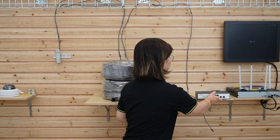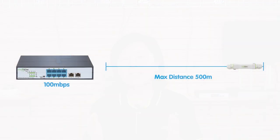There are three different ways we can use this switch. Method number one: we can support up to 500 meters and receive 100 Mbps data rate with a PoE extender at the edge. This is the setup for method one — 500 meters with a PoE extender at the edge using this 8-port PoE switch.